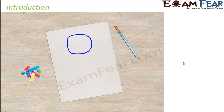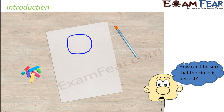Let me give you a small example. Let's say I ask you to draw a circle. You are given a sheet of paper and a pencil, and you draw a circle like the one on the screen. Now the question is, how would you be sure that the circle you have drawn is a perfect one? By the definition of a circle, it is a combination of points such that each point on the circle is equidistant from the center. Now if you compare the distance of point A from the center and point B from the center, do you think they will be exactly equal? You would see that the distance is not equal for all the points.